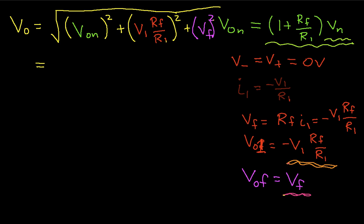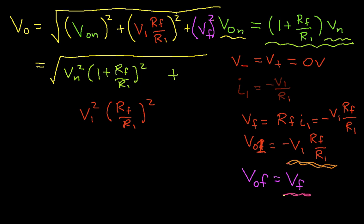So VON, this guy is the square root of VON squared times 1 plus RF over R1 squared plus V1 squared times RF over R1 squared plus,